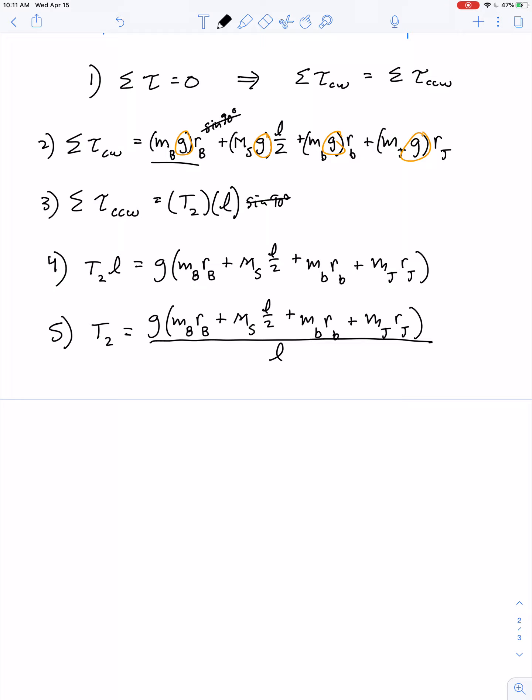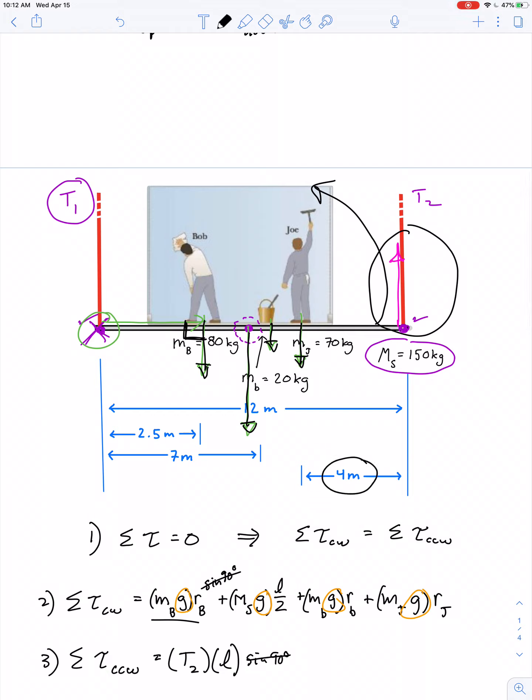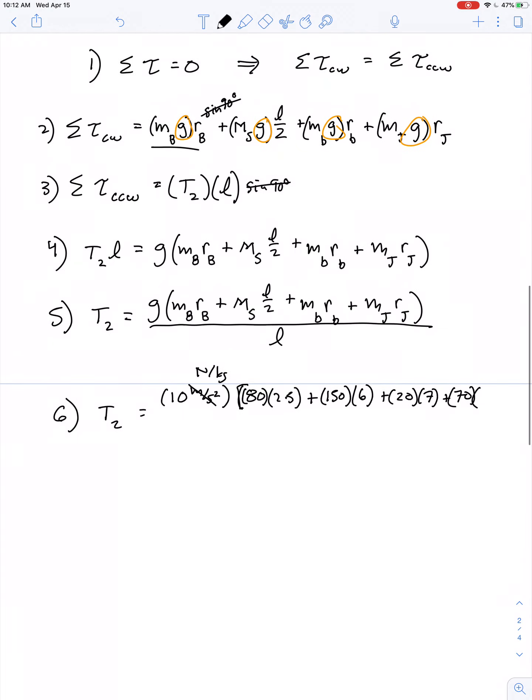Now we just need to plug in the values. Tension in the right cable equals 10 meters per second squared (same as 10 newtons per kilogram) multiplied by (80 times 2.5 plus 150 times 6 plus 20 times 7 plus 70 times 8), divided by 12. Note that Joe is standing four meters from the right end, so he's eight meters from the left end.